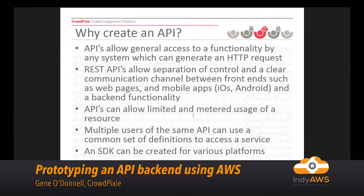Multiple users of the same API can use a common set of definitions. API Gateway also lets you implement different versions of your service with different endpoints and stages — so you can have different customers using different features, or set up dev, testing, and production environments. Last but not least, you can create an SDK so that depending on which platform your customer is using, you can build an SDK for iOS, Android, or JavaScript, allowing them to call your functions as native functions.